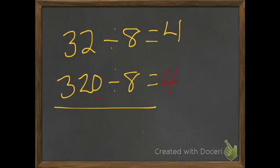Then we have that extra zero in the dividend that makes it 40. So 320 divided by 8 equals 40. That is not compatible numbers.